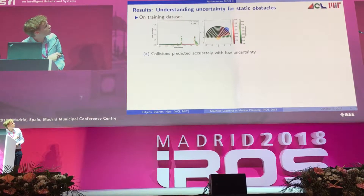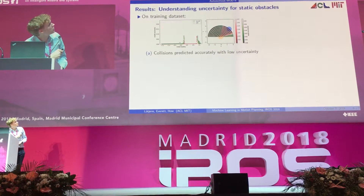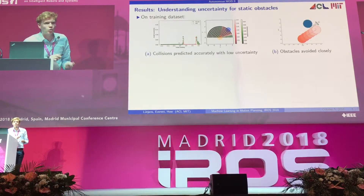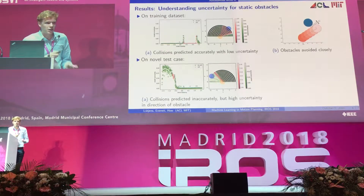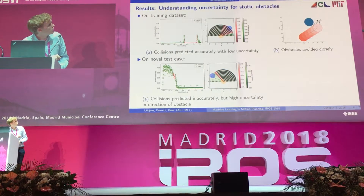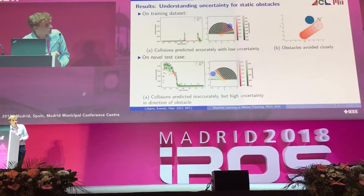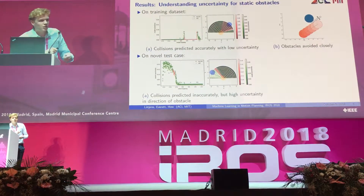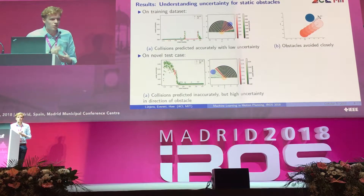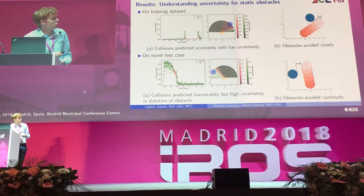On the training dataset the network predicts collisions in red and no collisions for actions into free space. The uncertainty is low for every action, so the confidence in the prediction allows the agent to closely avoid the obstacle. On the test case the agent correctly predicts no collisions into free space, but in the region of novelty it fails to predict collisions and marks them as safe in green. Luckily, the uncertainty is high in the region of the obstacle, so the agent avoids regions of high uncertainty and cautiously avoids the obstacle.